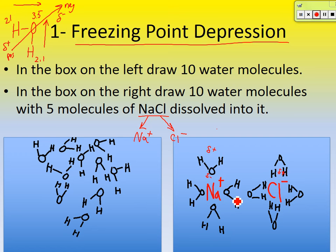Now if you keep dropping the temperature, will there be a point at which even salt water freezes? Sure, but it gets very, very cold. So most of the time you can keep the roads liquid water instead of ice. This is also exactly why ocean water doesn't freeze — even up by Alaska it's very cold, but the ocean water isn't frozen because there's salt in it, holding those water molecules apart.